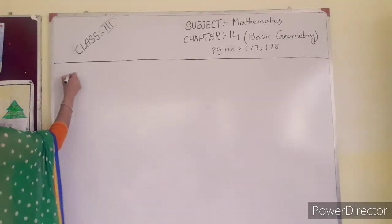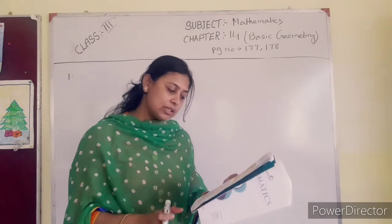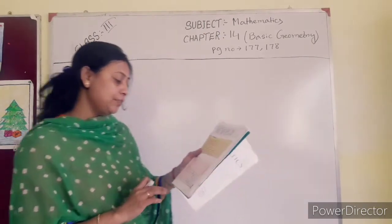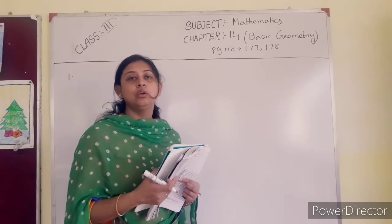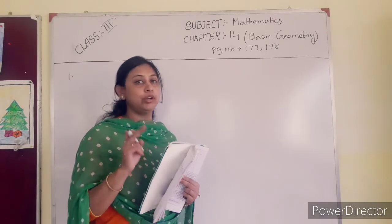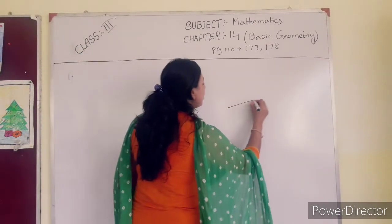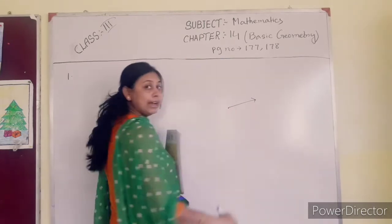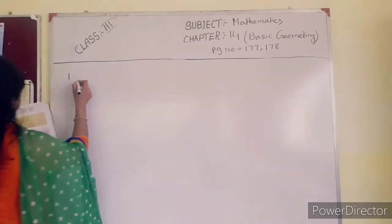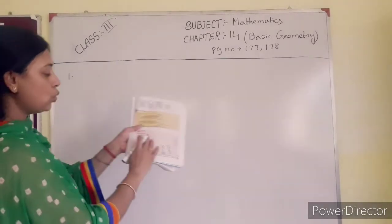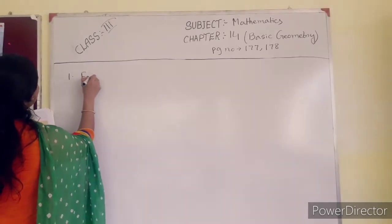First one: everyone has books, so I am not writing anything — just I will write the answer. Write true or false: 'A ray has no end point.' No, a ray has one end point. The statement says ray has no end point, but the answer is ray has one end point, so the answer is false.